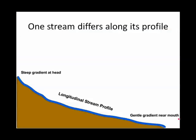One stream can do all these processes, but it does them in different parts. At the steep headwaters of a stream, you have a very high erosion rate. Along its trunk, you have both erosion and deposition, and at the very gentle mouth, you have only deposition.